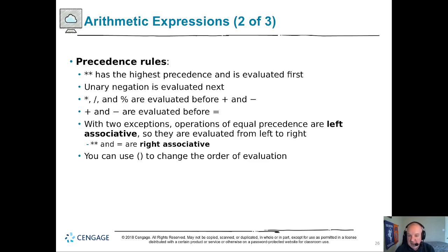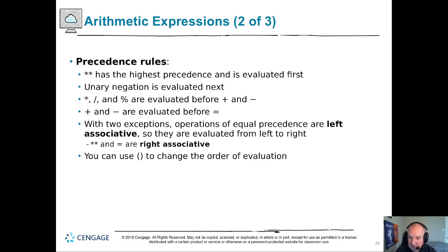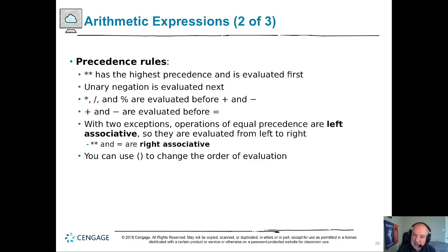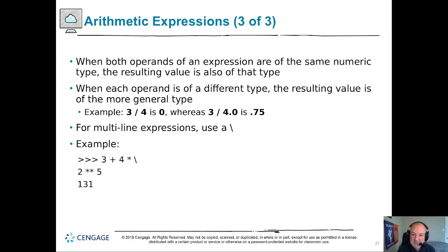Everything is left-associative, meaning evaluated from left to right. Multiplication, division, and modulus are equal in precedence, so you do them left to right — you don't do all the multiplication first then all the division. Plus and minus are also done left to right. Double star and equal-sign are right-associative: everything on the right has to finish before you can do your exponents. And last — actually first — parentheses change everything. Use parentheses to control the order of operations. Parentheses are evaluated above double star. So the order is: parentheses, double star, unary negation, multiplication/division/modulus, addition/subtraction, assignment.